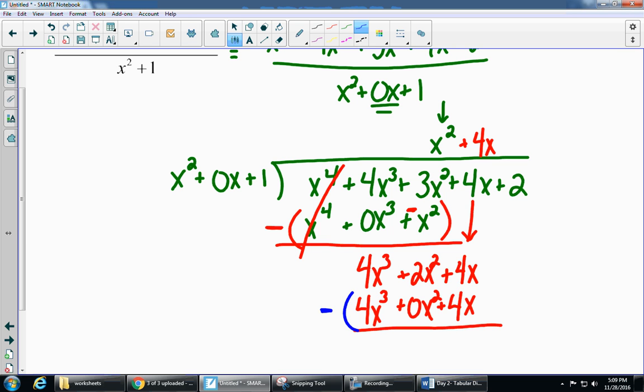So now I am going to subtract the whole thing. So I'm going to put my minus sign and my parentheses so I don't forget. 4x cubed minus 4x cubed cancels. 2x squared minus 0x squared is 2x squared. 4x minus 4x is 0x. And then I'm going to bring down this plus 2.